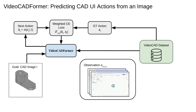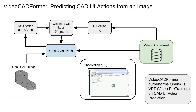Using VideoCAD, we develop VideoCADformer, a causal autoregressive transformer model that predicts low-level CAD UI actions directly from images using behavior cloning. Conditioned on a target CAD image and a window of past frames, the model outputs the next action and can plan long-horizon CAD sequences. VideoCADformer achieves state-of-the-art performance on CAD UI action prediction, and outperforms OpenAI's VPT.